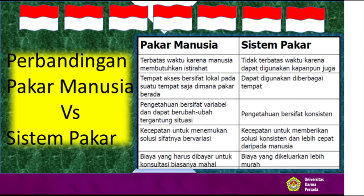Kita lihat perbandingan antara pakar manusia dengan sistem pakar. Pertama dari sisi waktu: pakar manusia waktunya terbatas karena manusia membutuhkan istirahat, sedangkan sistem pakar tidak terbatas waktunya karena dapat digunakan kapanpun kita butuhkan. Kemudian yang kedua dari sisi tempat akses: pakar manusia bersifat lokal pada suatu tempat saja di mana pakar berada, pengetahuan ada di dalam otak pakar tersebut dan tidak bisa didistribusikan dengan bebas. Sedangkan sistem pakar dapat digunakan dan didistribusikan ke berbagai tempat manapun.